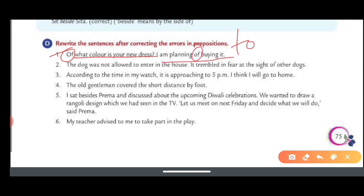The dog was not allowed to enter in the house. It trembled in fear at the sight of other dogs. Your answer is: The dog was not allowed to enter the house. No need to use in here. Enter the house. It trembled in fear at the sight of other dogs. This is correct. Next, number three: According to the time in my watch, it is approaching to 5 PM. I think I will go to home. According to the time in my watch, it is approaching 5 PM. This is correct.